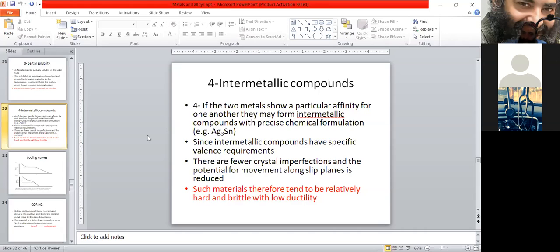These have a precise chemical formulation, for example silver-tin, which is present in our amalgam. Intermetallic compounds have specific valence requirements, so due to this, imperfections are less as compared to others. Therefore, movement along slip planes is much less in intermetallic compounds.